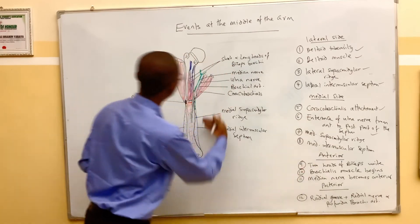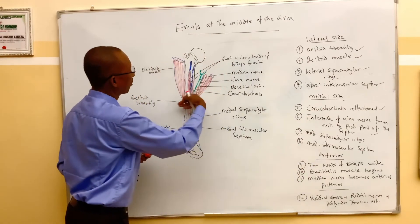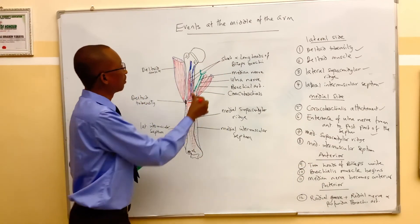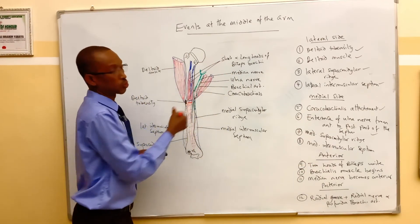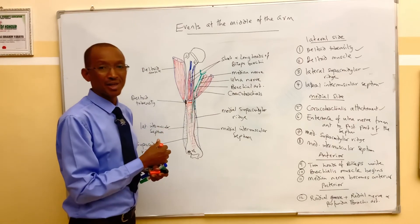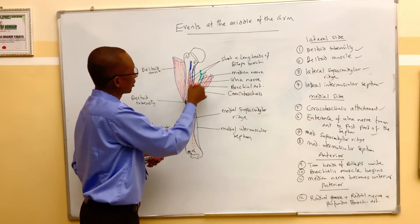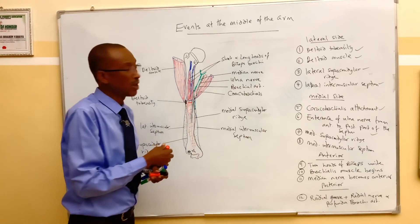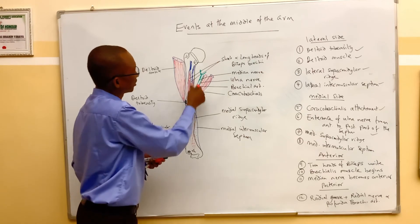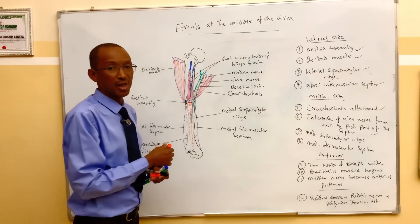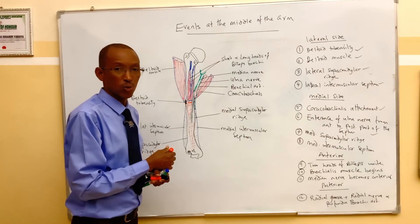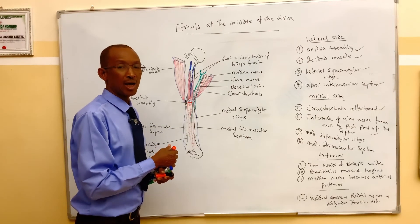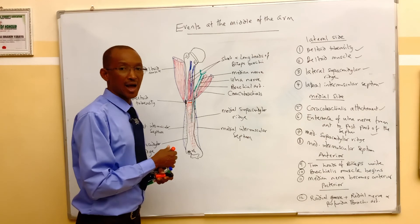When we look at the posterior aspect of the middle of the arm, we have a groove called the radial groove. That radial groove extends into the middle of the arm and contains the radial nerve together with the profunda brachii artery.